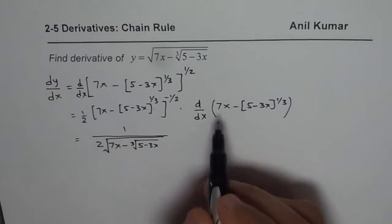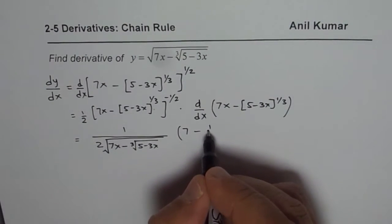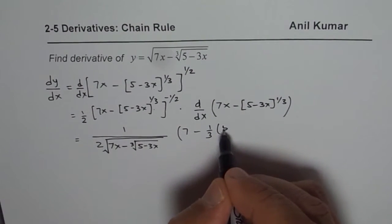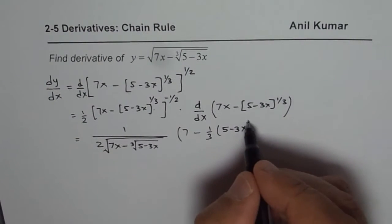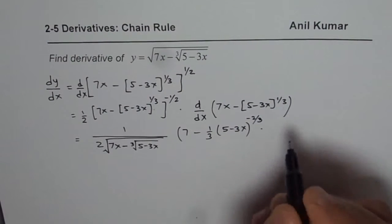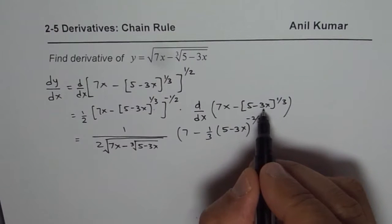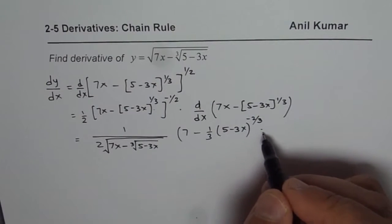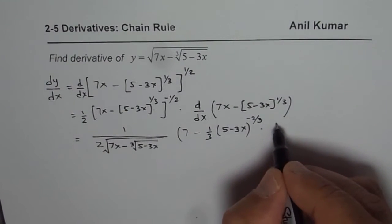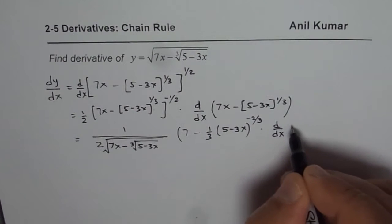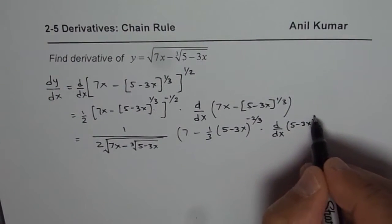Now, derivative of this function is, we get 7 minus one third of (5 minus 3x) to the power of 1/3 minus 1, which is minus 2/3, times derivative of inside function. So derivative of inside function is minus 3. So instead of getting one more step there, let me write derivative d dx of inside function, which is 5 minus 3x.